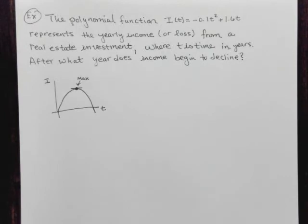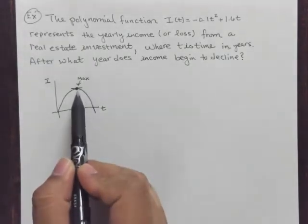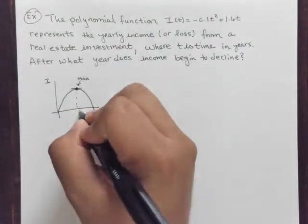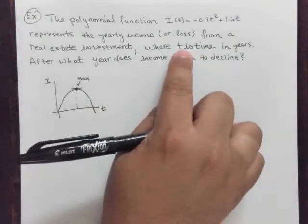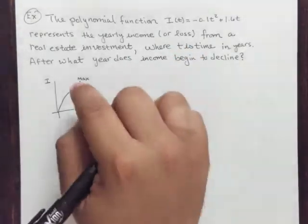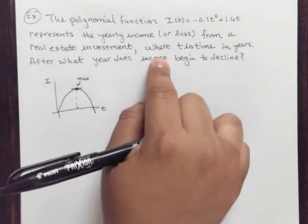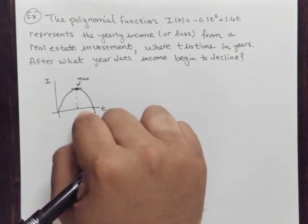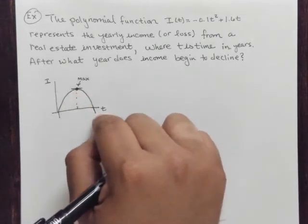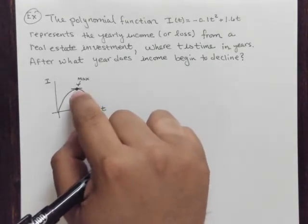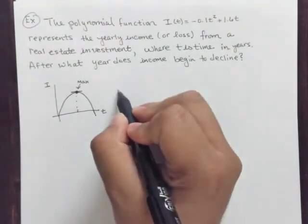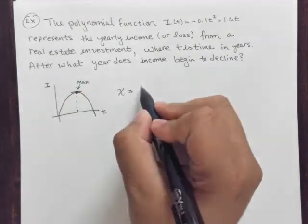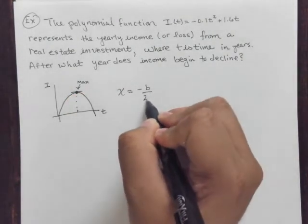All we need to do is find the x-coordinate of the vertex, because they want to know at what time t is this income going to start declining. They don't care about the income at all — they just want to know after how many years the investment will reach its maximum point and then start to decline. So we're looking for the x-coordinate of the vertex, and the maximum is the vertex. It is negative b over 2a.